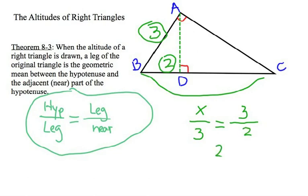So, when we cross-multiply, 2X equals 9, and of course, solving for X, we get 5, or excuse me, 4.5.